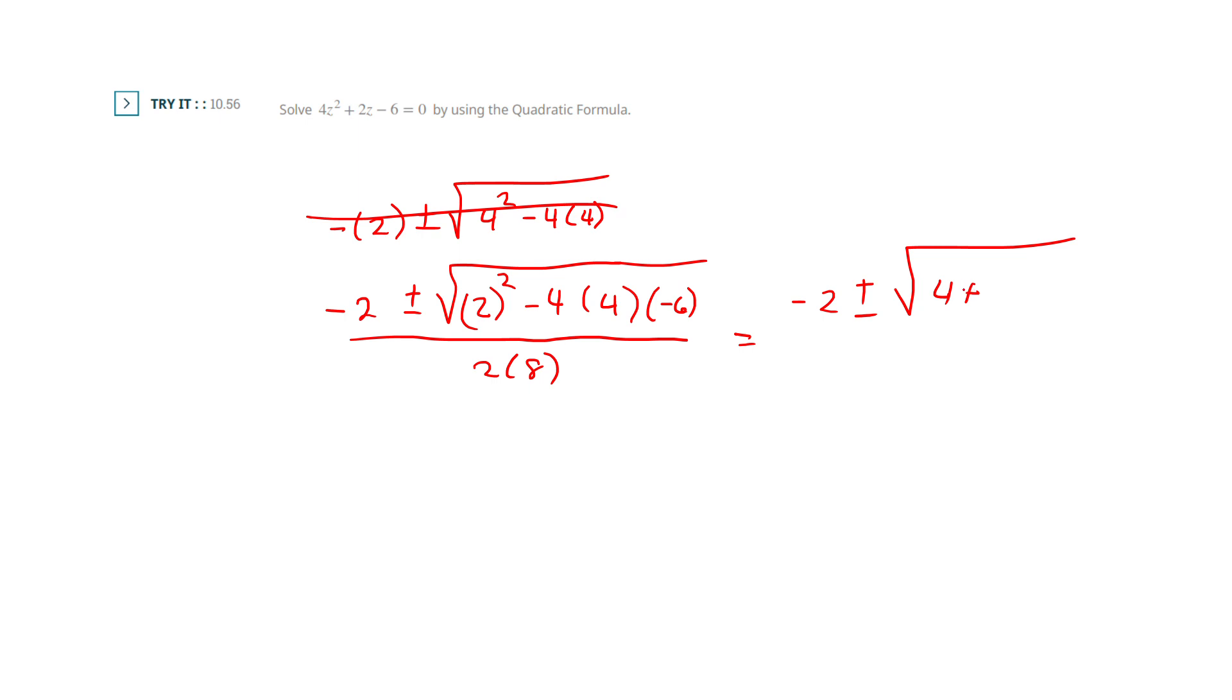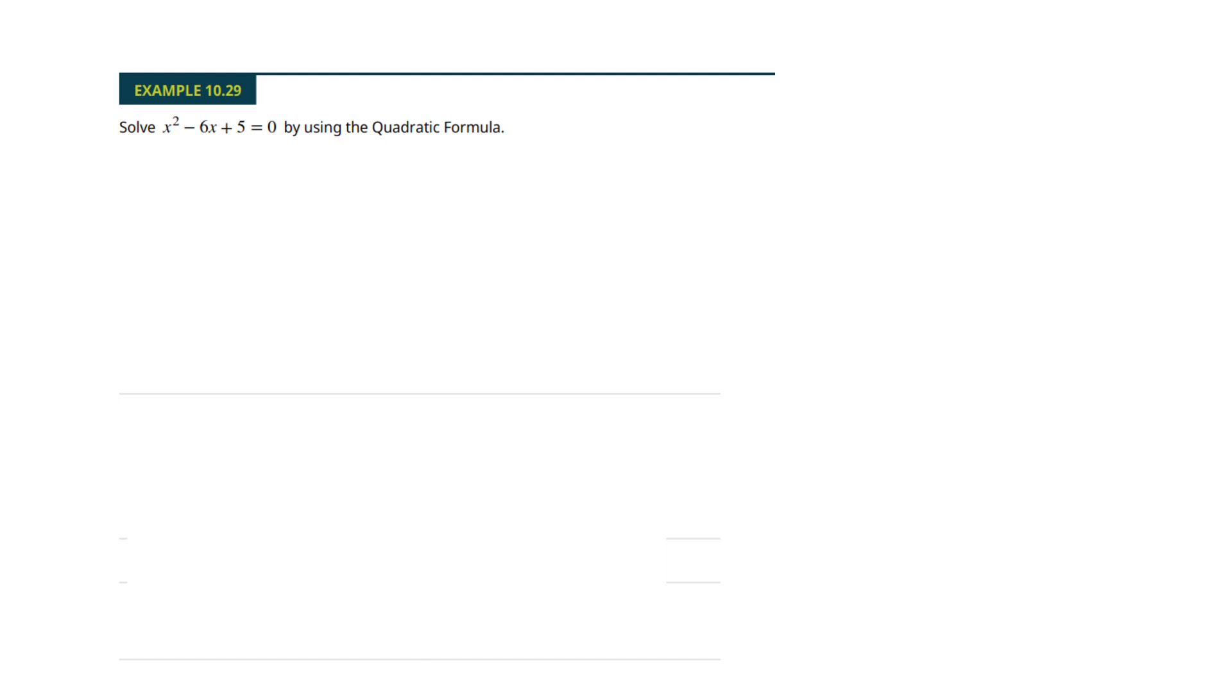So I add 4 times 4 times 6. So I'm going to get 96 in there all over 16. 8 of 2 plus or minus 10 over 16. So I'm going to get 8 over 16 or negative 12 over 16. And I can simplify those. I'm going to get 1 half or negative 3 fourths.